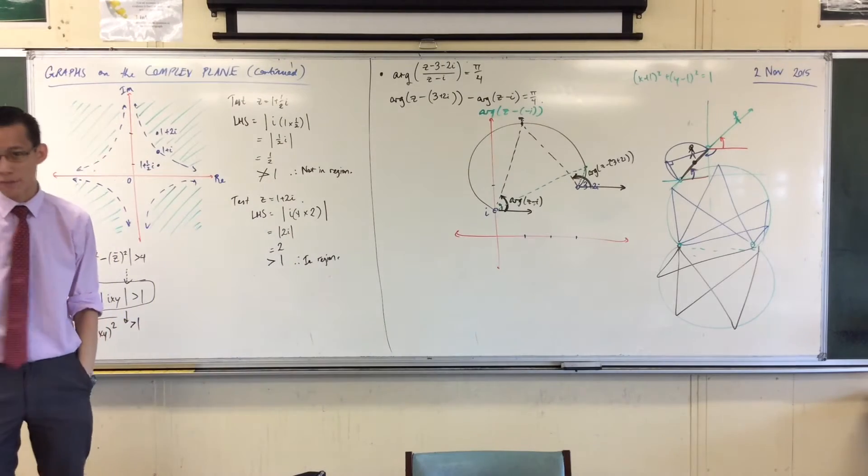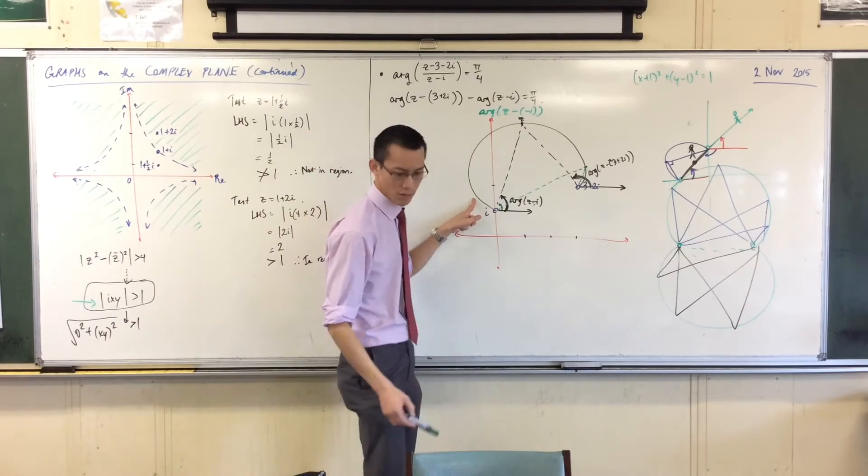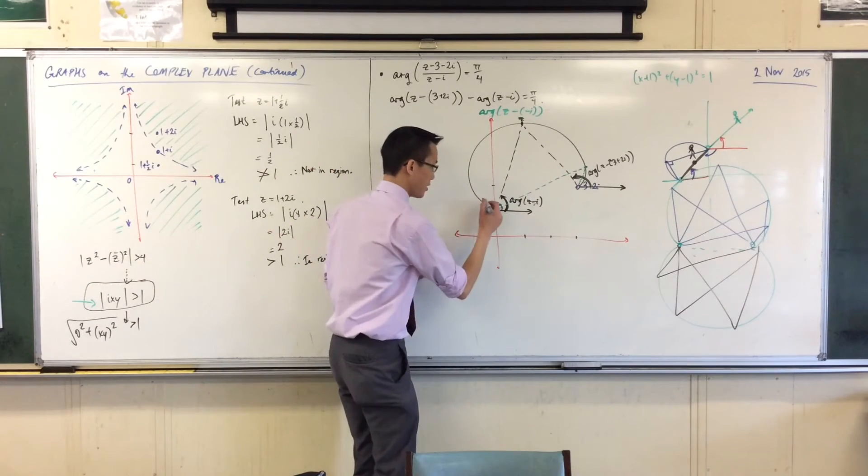Where else could I put z that might give me a different kind of case? On the other side. Yeah, down here. Right, so let's think about this one. I need one last color. Think about a point like this.